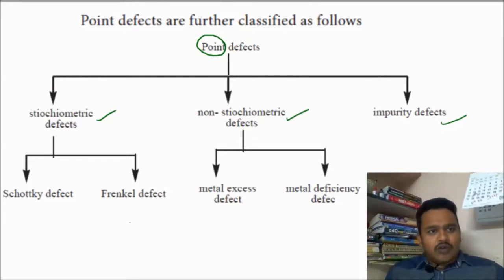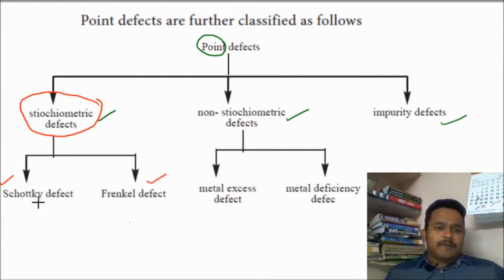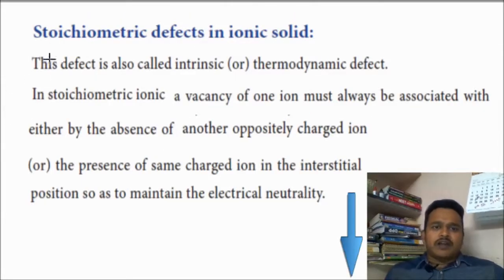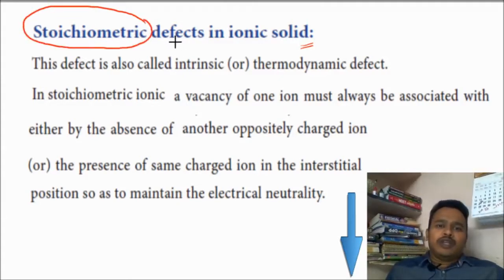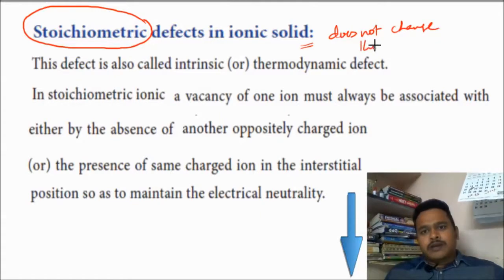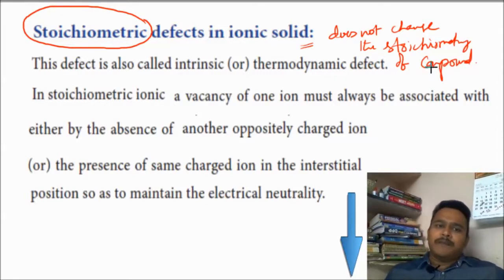In this video, what we are going to study is stoichiometric defects — in that, Schottky defect and the Frenkel defect. These two are important and will come in the examination, including competitive examinations. What is a stoichiometric defect? The name itself explains — due to the defect, due to the irregularity in the arrangement, which does not change the stoichiometry of the compound, that type of defect you can say is a stoichiometric defect.